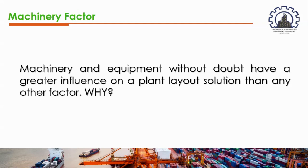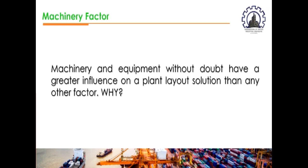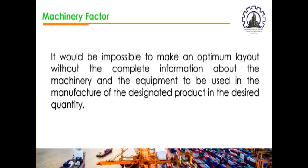Machinery and equipment without doubt have a greater influence on plant layout solutions than any other factor. However, it is not the most important part of a plant layout because materials hold that place. It would be impossible to make an optimum layout without complete information about the machinery and equipment to be used in the manufacture of the designated product in the desired quantity. When we say optimum, we mean most conducive to a favorable outcome — the best result.